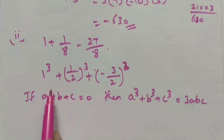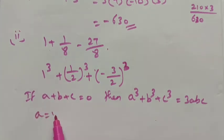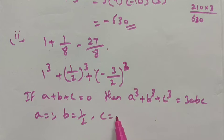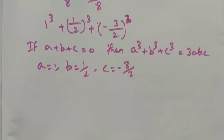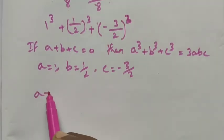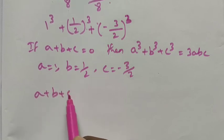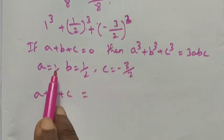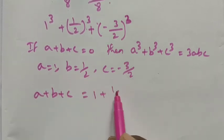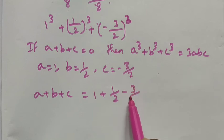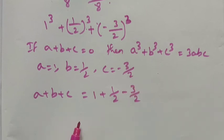In the place of a is 1, b is equal to 1 by 2, and c is equal to minus 3 by 2. Therefore, we check: a plus b plus c equals 1 plus 1 by 2 plus minus 3 by 2.